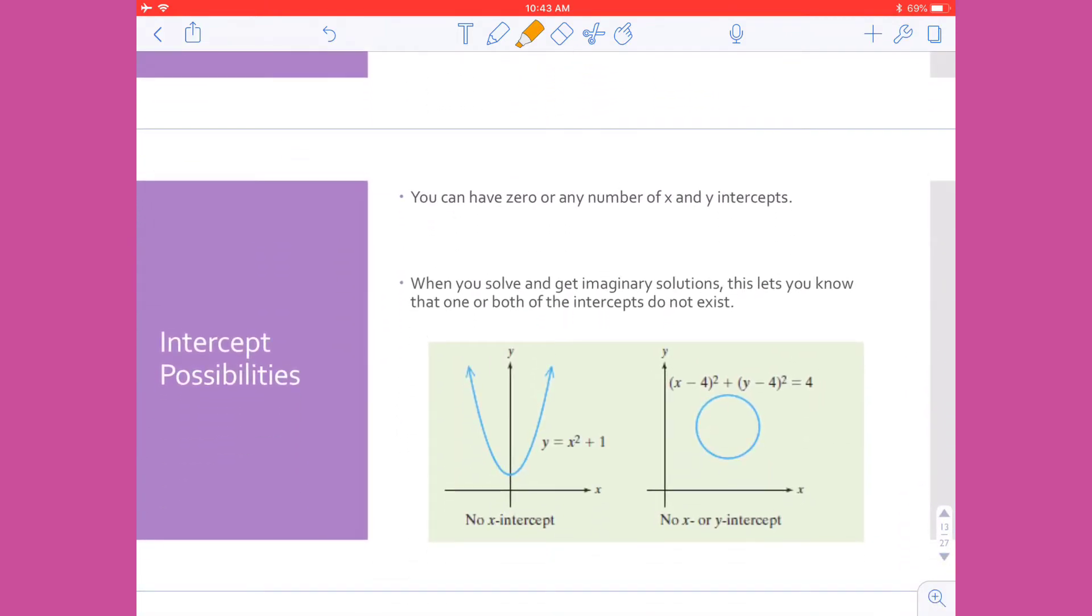Now there are different intercept possibilities. You can have zero or any number of x and y-intercepts. But it's also possible that you don't have any of a particular intercept. Whenever you solve and you get imaginary solutions, which include that letter i, this lets you know that one or both of the intercepts does not exist.